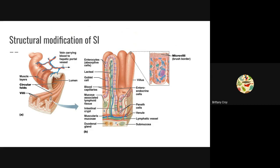If we zoom in onto one of the circular folds, these finger-like projections are villi. They are finger-like projections of the mucosa and they contain blood vessels — arteries, veins, and lymphatic capillaries — that are going to absorb whatever is digested in the small intestine.